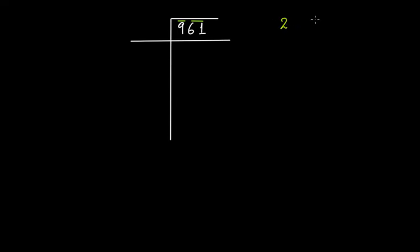If you're wondering how, the number of bars tells you the count of digits in the square root, and we have discussed this in our previous video. The link to that tutorial you can find in the description box below. So one thing is clear — your square root will have two digits.